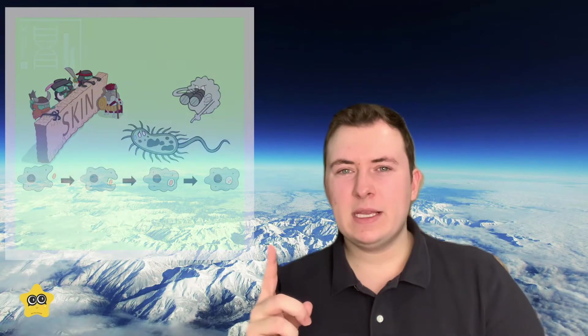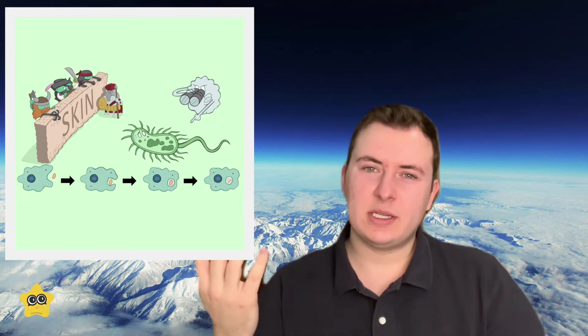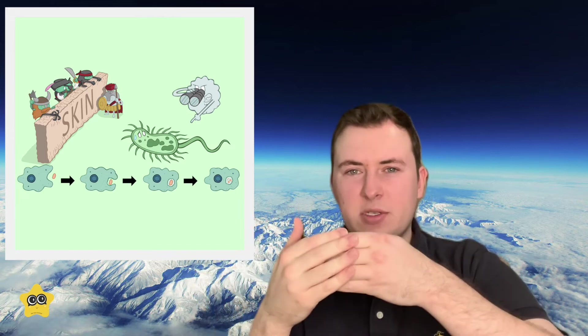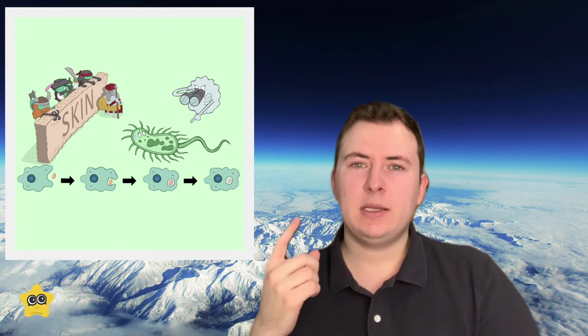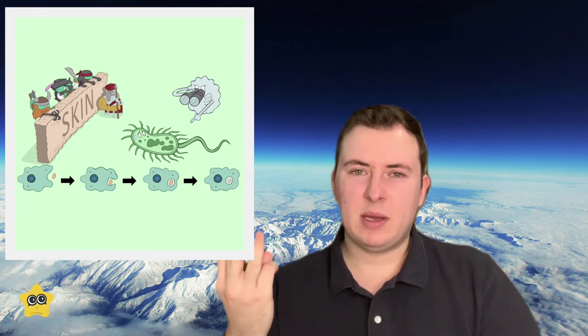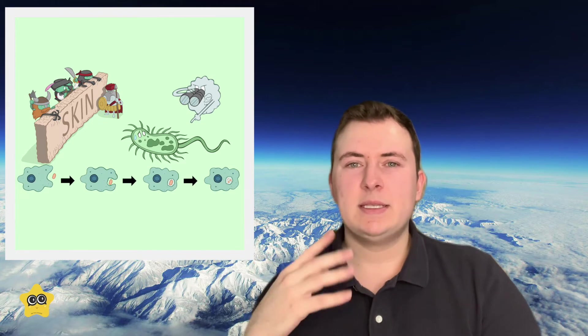Our innate immune system is our first line of defense against germs entering our bodies. It could be thought of as a wall or a security force that's made up of skin, cells, mucous membranes, and proteins. Together, they act in a general fashion to prevent foreign substances from causing us harm. Usually, they do a pretty good job.